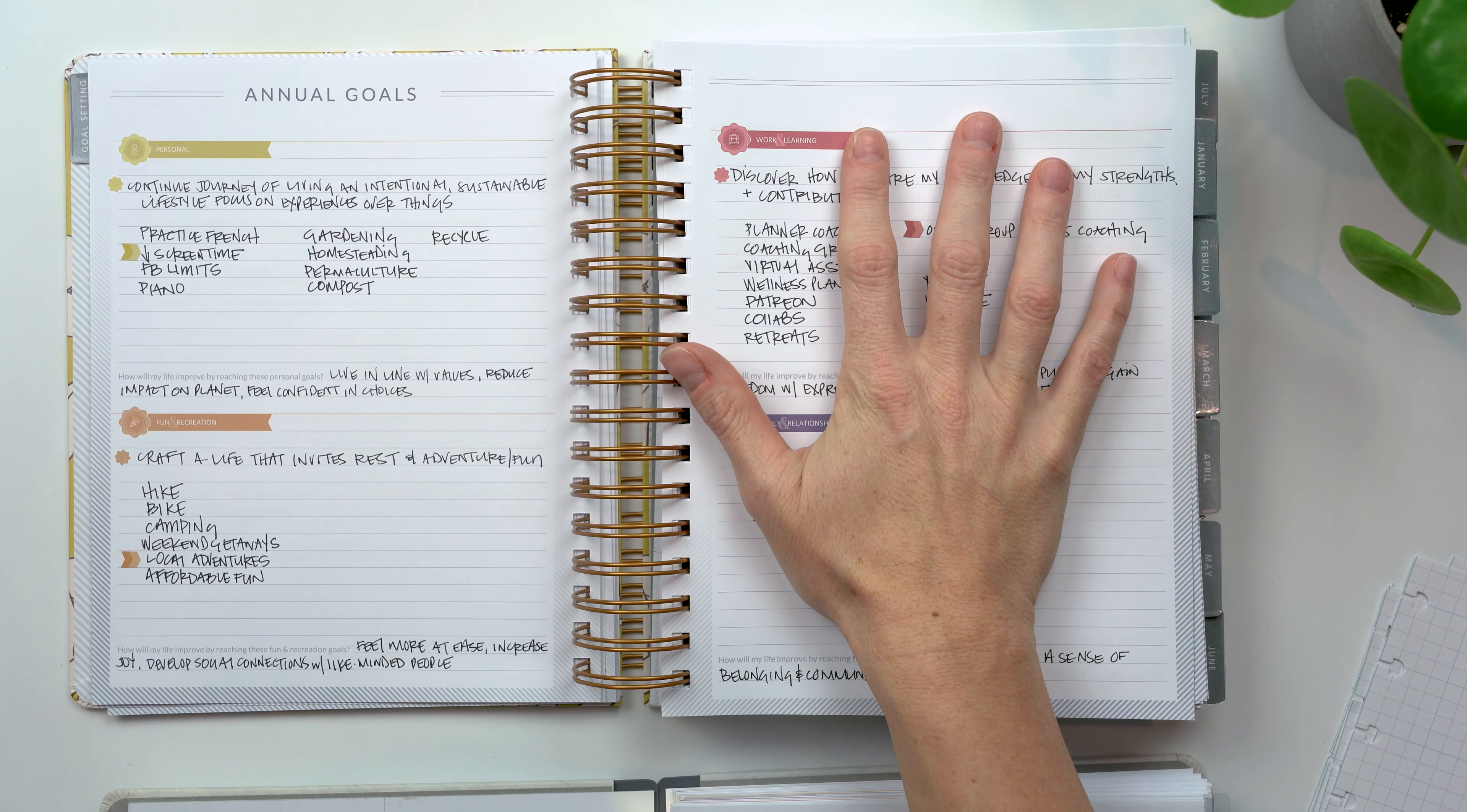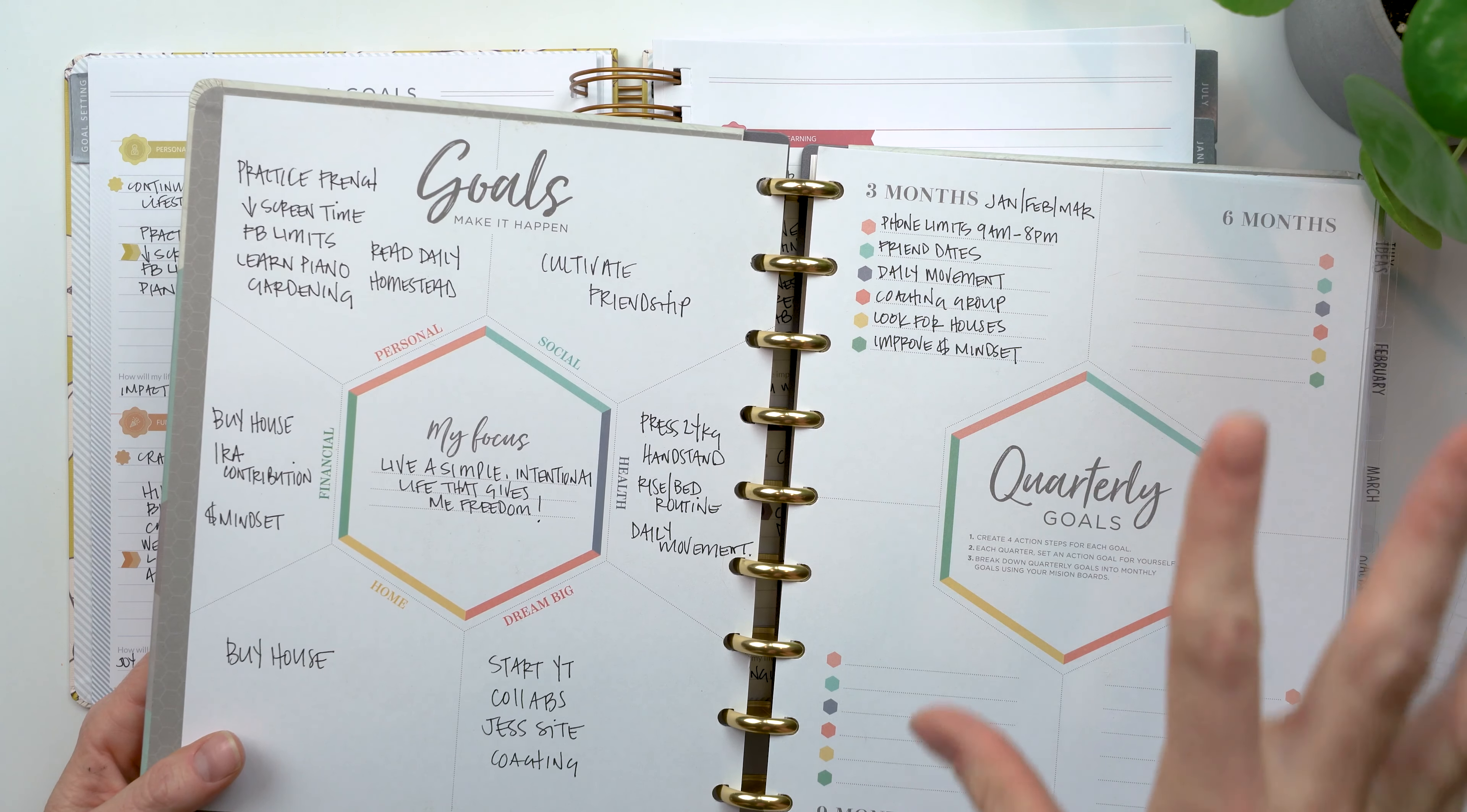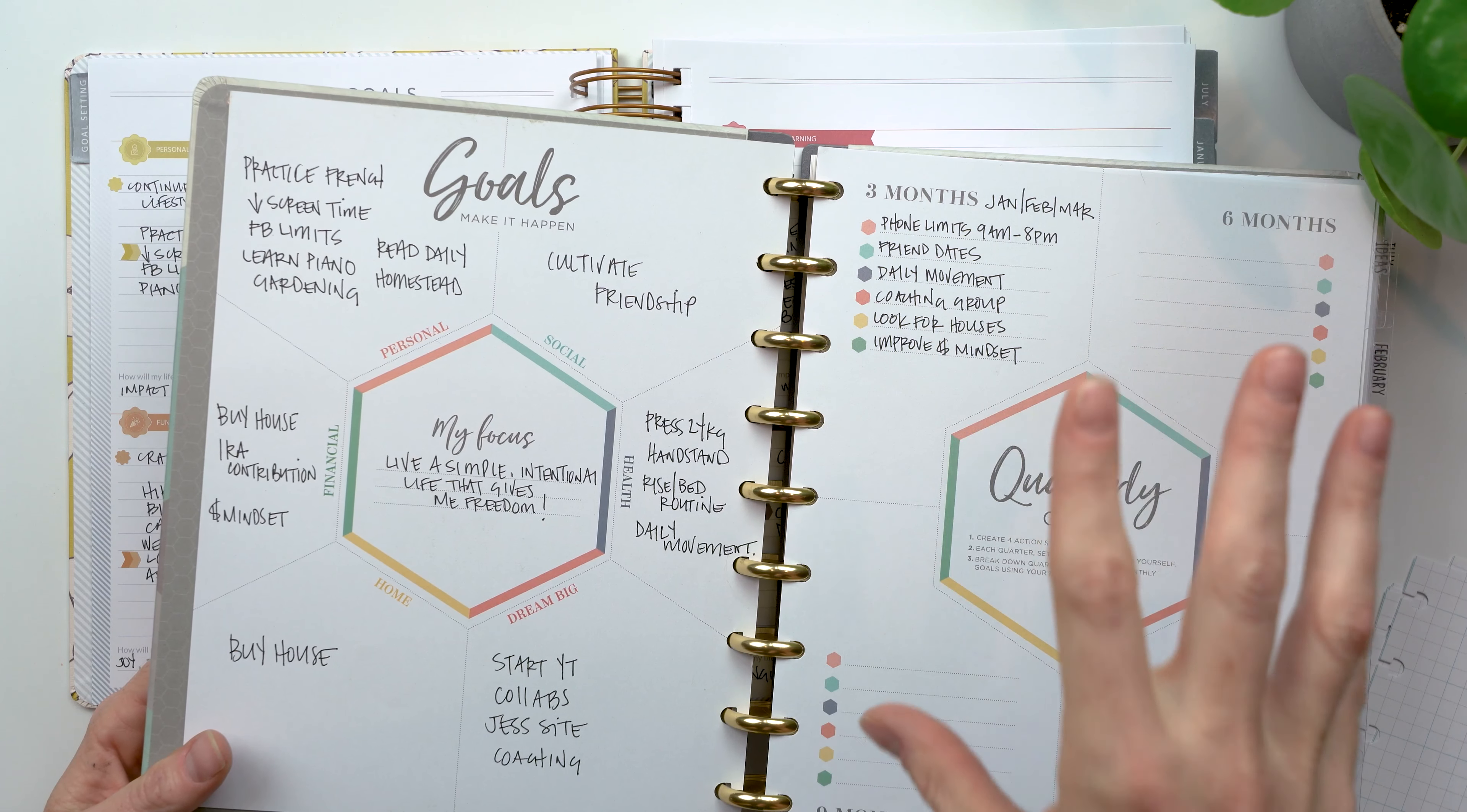Moxie Life has eight areas of life. Inkwell Press, at least in this version, in the weekly, you get six. I don't know what it is in the goal planner. For me, this is like a, I have like a love hate with areas of this idea of like putting your life into various areas and picking goals for each area.